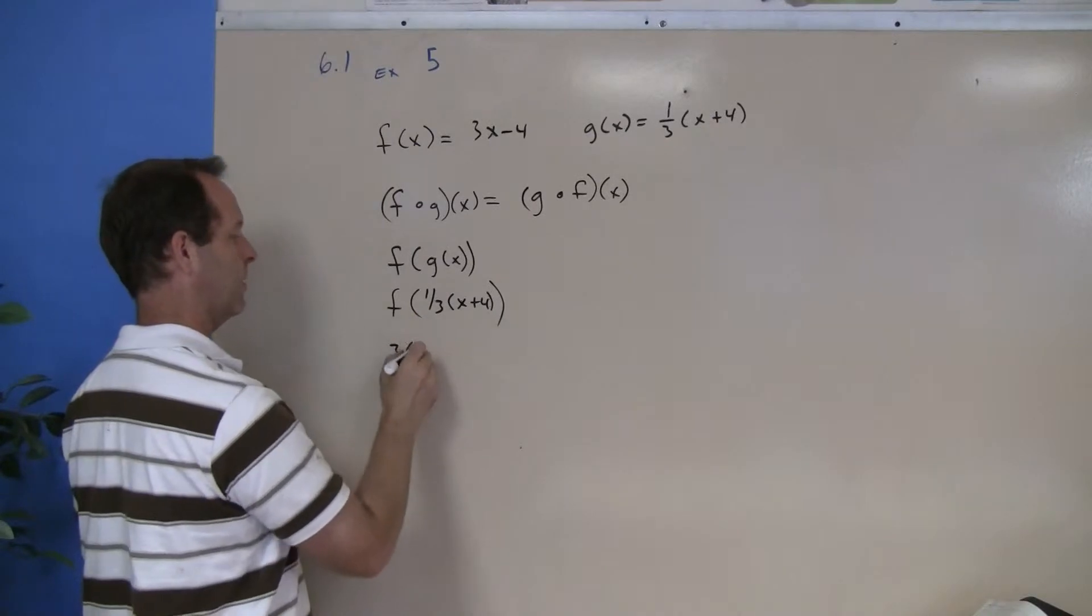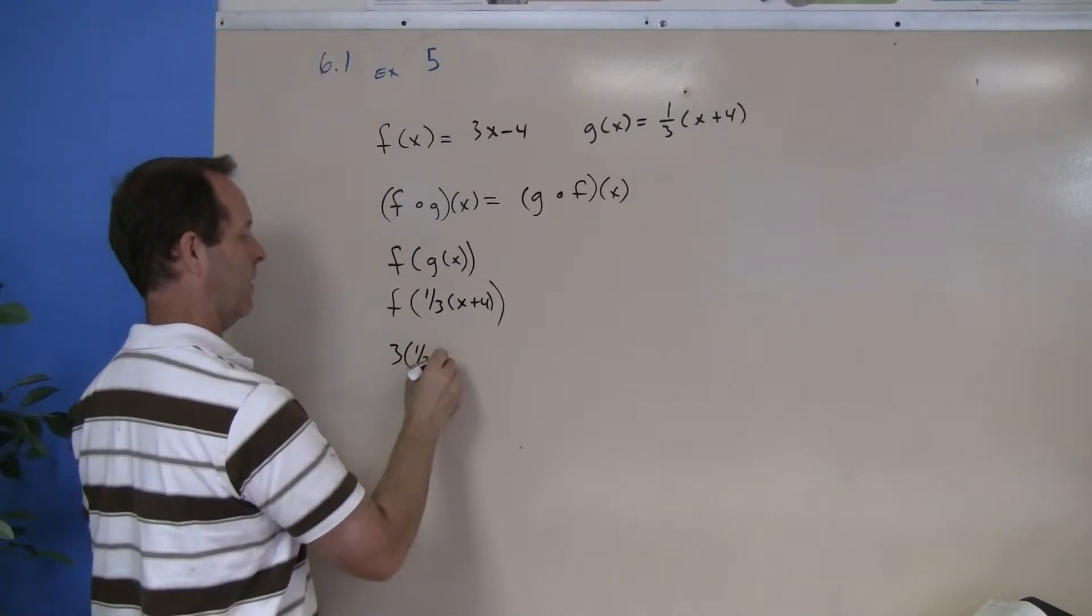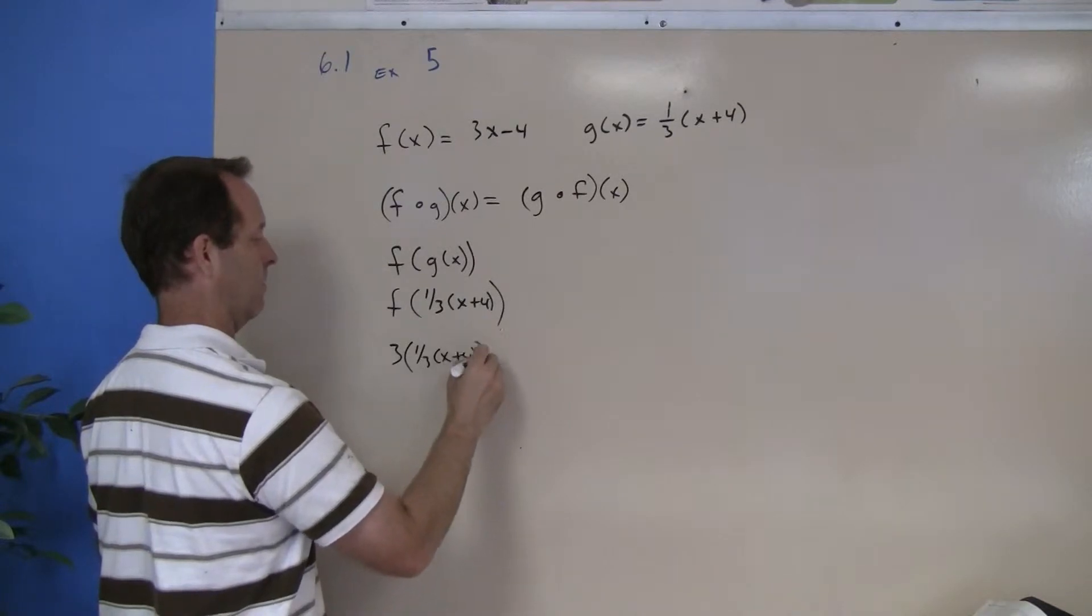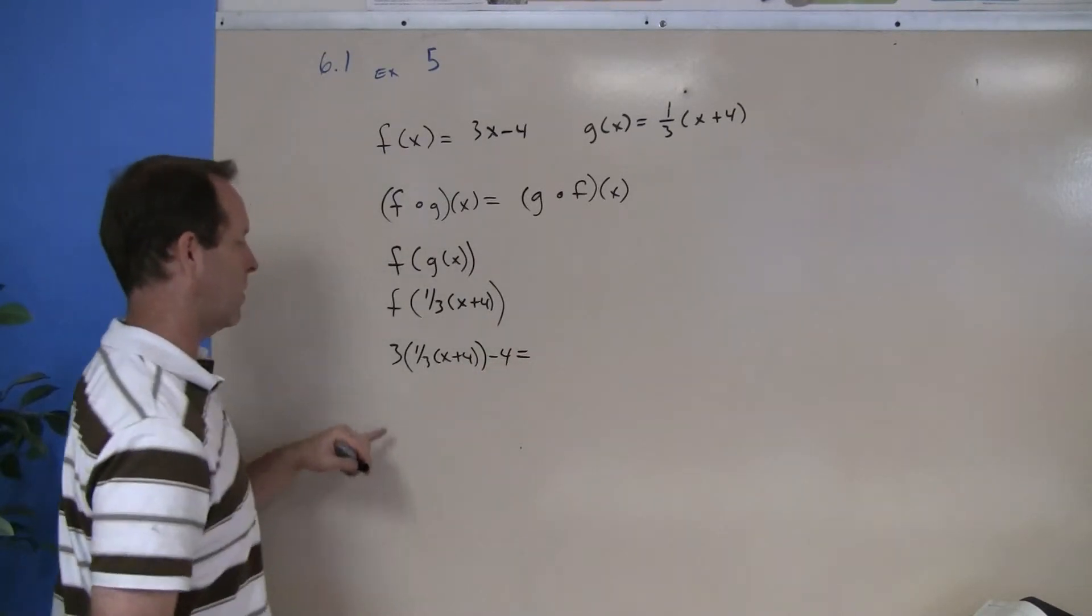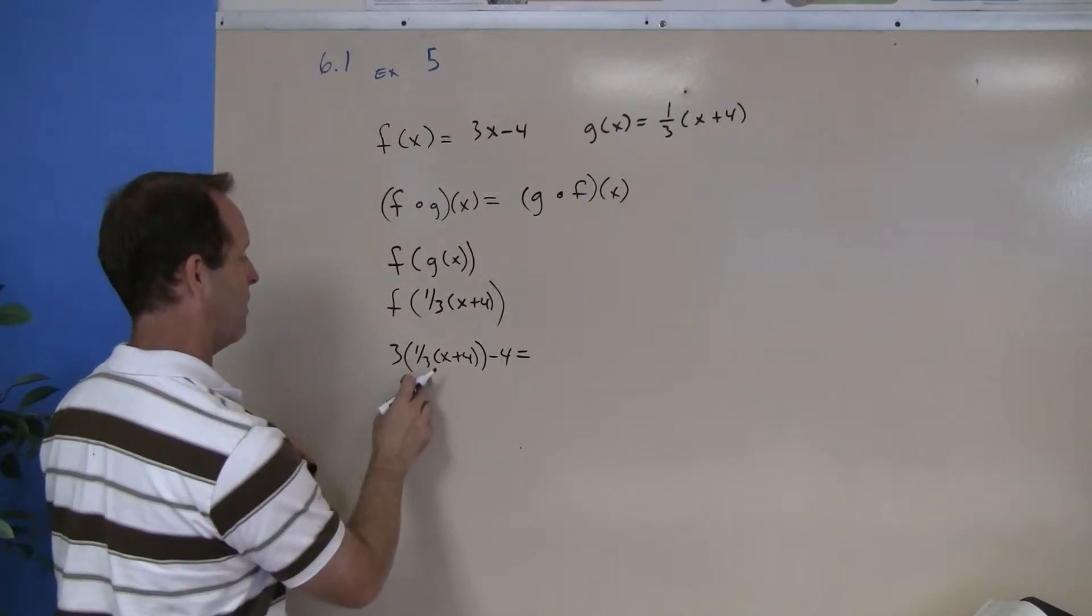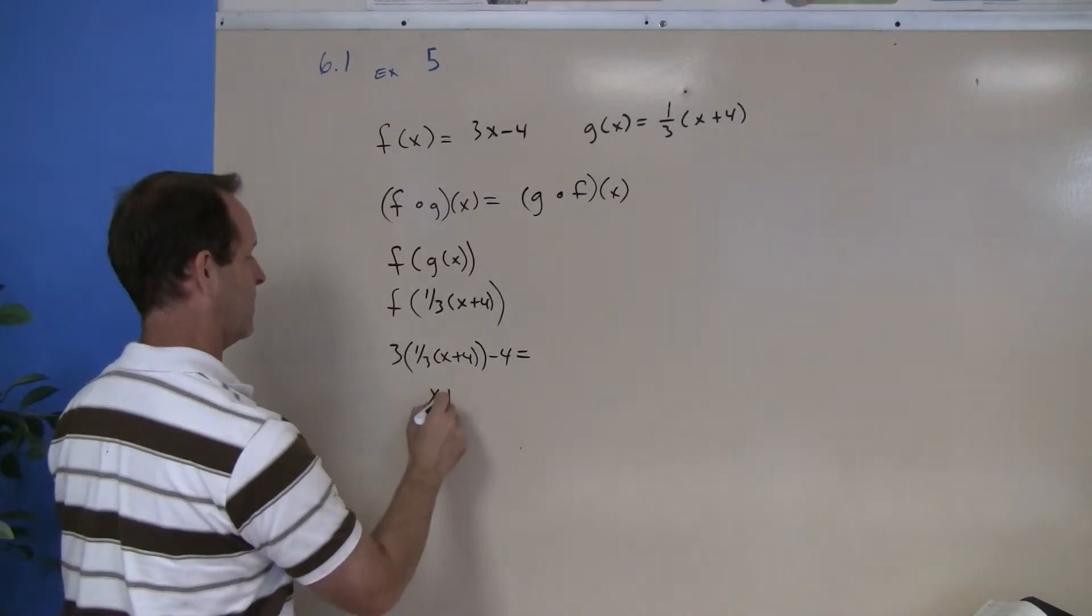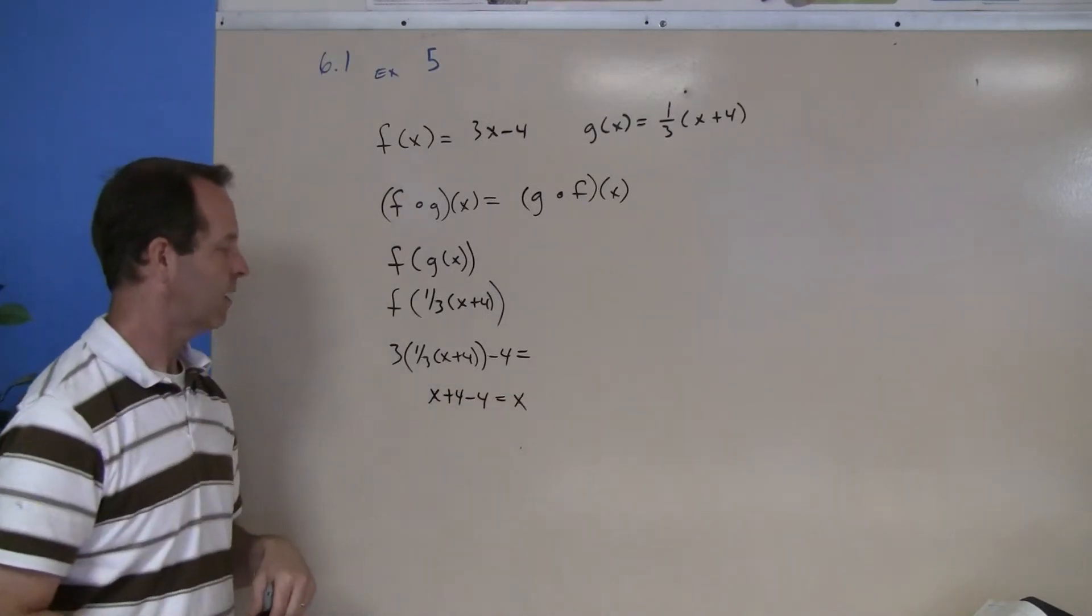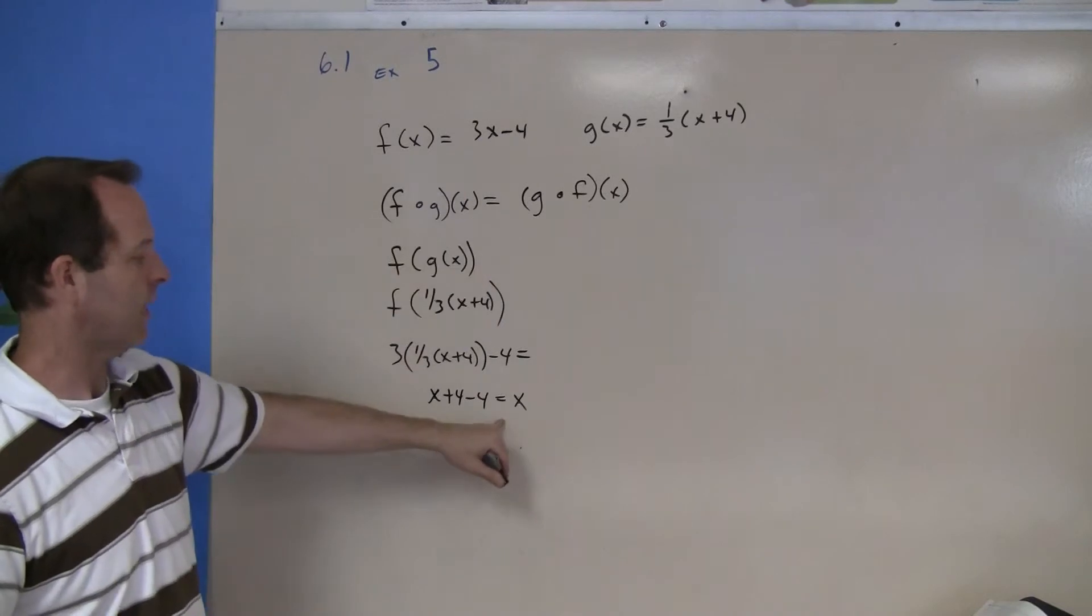So three times one-third x plus four minus four. And that equals, let's do my work here and find out, three times one-third is x plus four. Take away four, that just equals x. So f composed of g of x equals x.